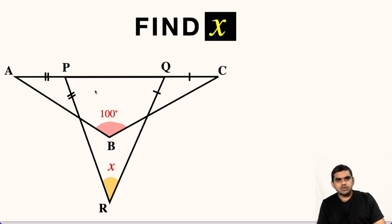In this question, two triangles are given: triangle ABC and triangle PQR. In triangle ABC, angle B is 100 degrees. We are asked to find the value of angle R, that is x.